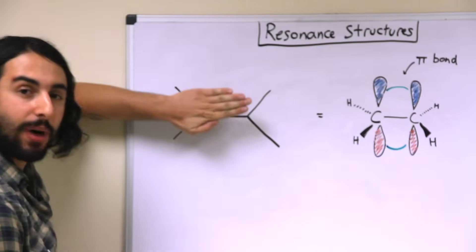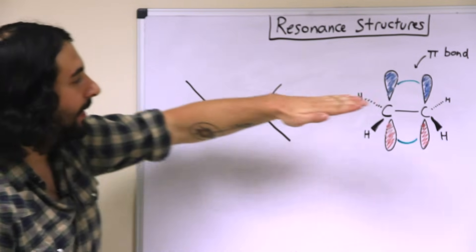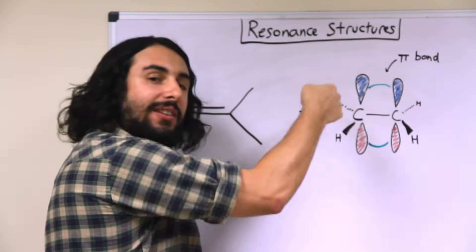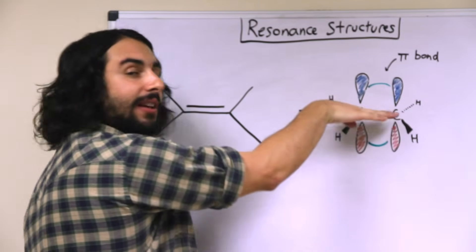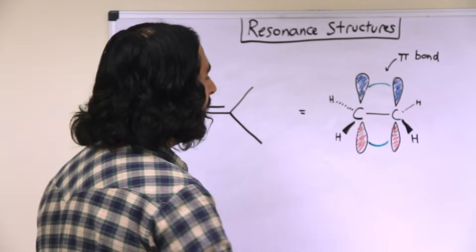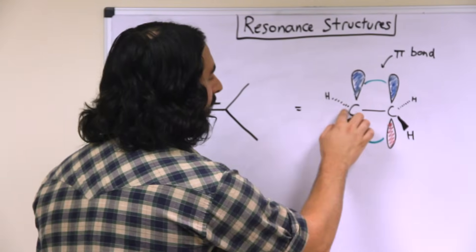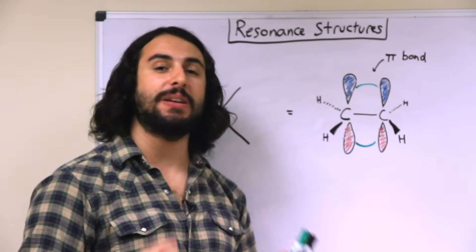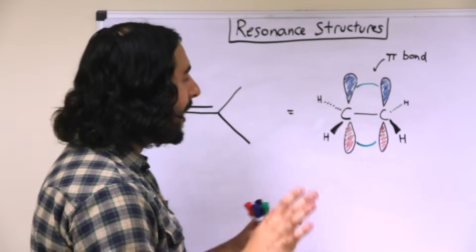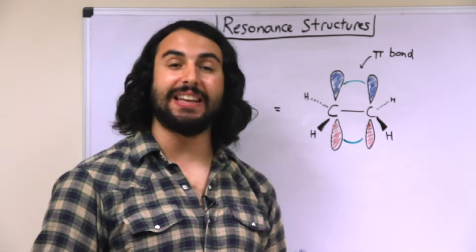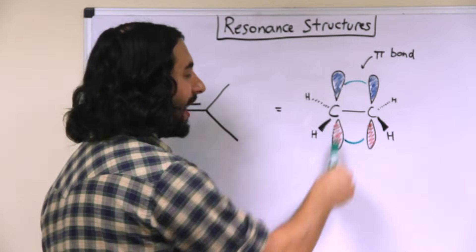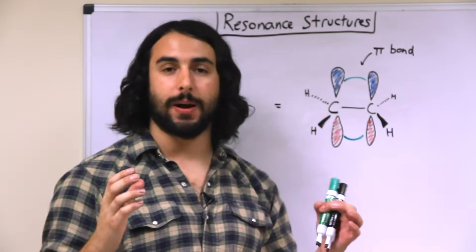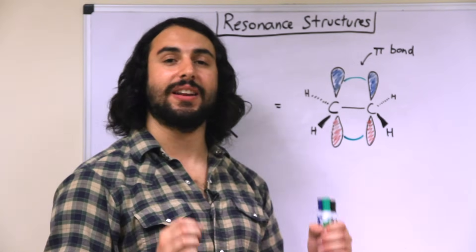Let's take this flat molecule and flip it like this and view it edge on. These hydrogens are away from us further past the board; these hydrogens are towards us precisely in a plane perpendicular to the board. And what we're seeing is that the carbon is bound to these other three atoms — the carbon and the two hydrogen atoms — by its sp2 molecular orbitals. But that leaves an unhybridized p orbital extending in perpendicular fashion up and down in opposite directions.